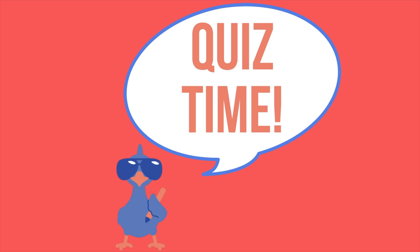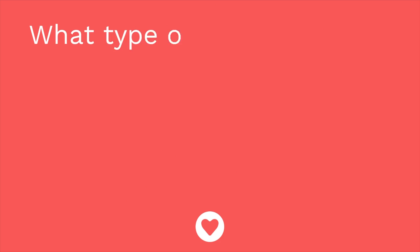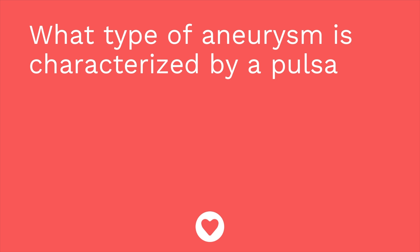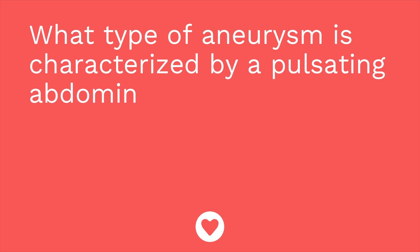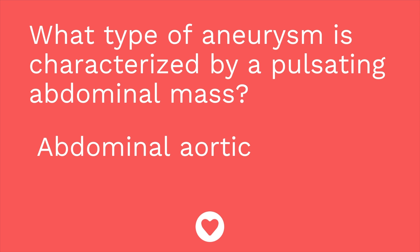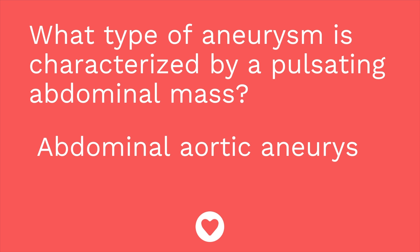It's time for a quiz — three questions for you. First question: what type of aneurysm is characterized by a pulsating abdominal mass? The answer is an abdominal aortic aneurysm, or AAA.